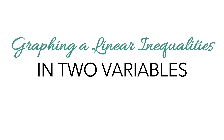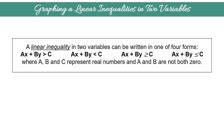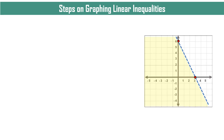Graphing a linear inequality in two variables. A linear inequality in two variables can be written in one of four forms: Ax plus By greater than C, Ax plus By less than C, greater than or equal to C, or less than or equal to C, where A, B, and C represent real numbers and A and B are not both zero. When you graph a linear inequality, the result will look like this — it has two points, a line, and a shaded part.